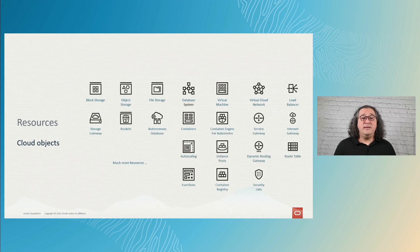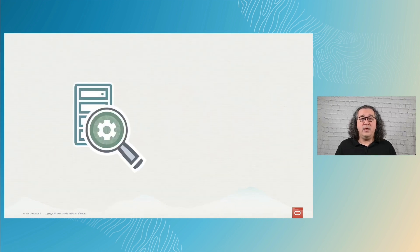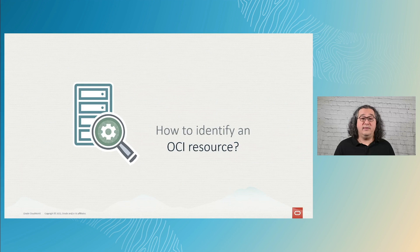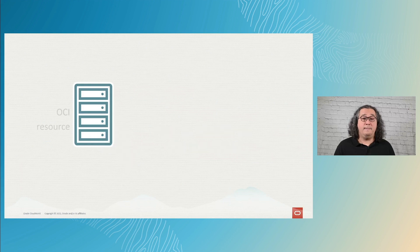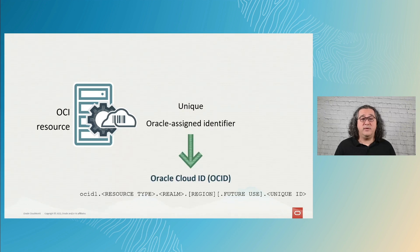From the tenancy itself to block volumes, VCNs, instances — everything on OCI is a resource. But how are resources identified? Each resource has a unique Oracle-assigned identifier, or OCID for short.